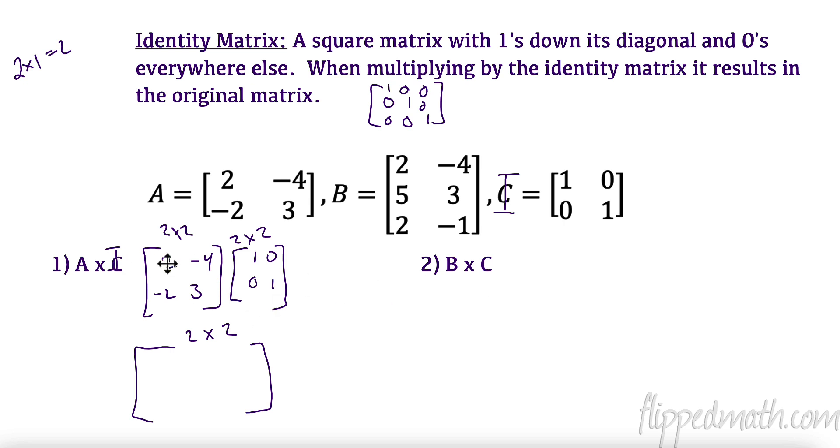I have a 2x2, and I have a 2x2. So, they match in the middle, and I will get a 2x2 in the end. First element is first row, first column. 2 times 1 is 2. Negative 4 times 0 is 0. So, this is going to be 2. First row, second column. 2 times 0 is 0. Negative 4 times 1 is negative 4. Add them together, I get negative 4. Second row, first column. Negative 2 times 1 is negative 2. 3 times 0 is 0. So, negative 2. Second row, second column. Negative 2 times 0 is 0 and 3. So, we got the exact same thing back.